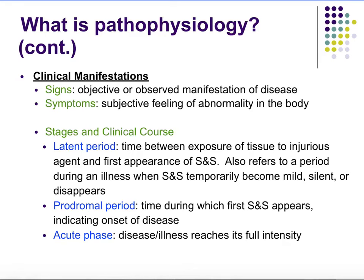Then we have clinical manifestations, which includes signs and symptoms. Signs are the objective or observed manifestations of the disease, whereas symptoms are subjective feelings of abnormality. For example, if you feel like you have a headache and feel lethargic, those would be symptoms. If you have a bruise, that would be a sign.